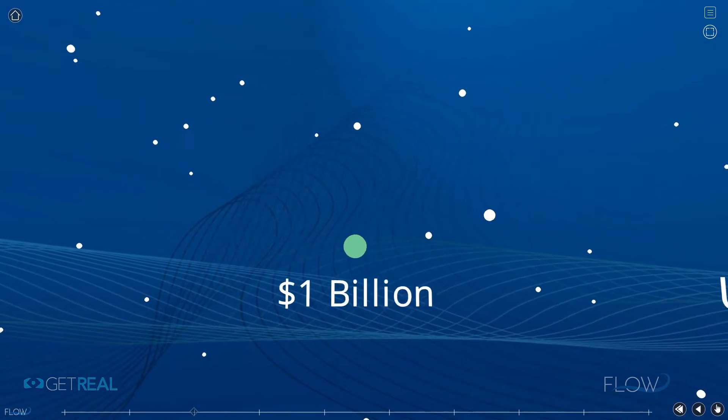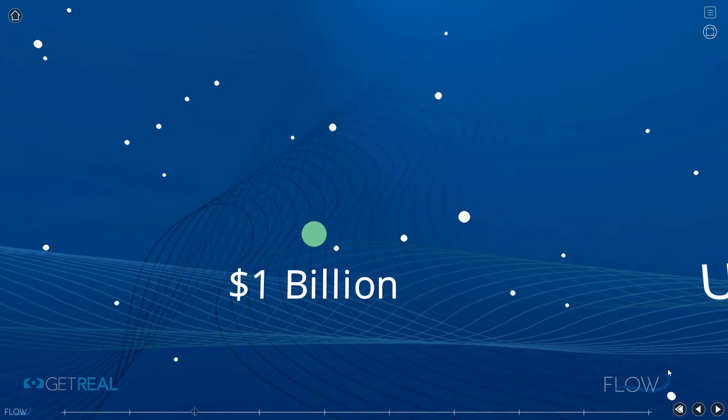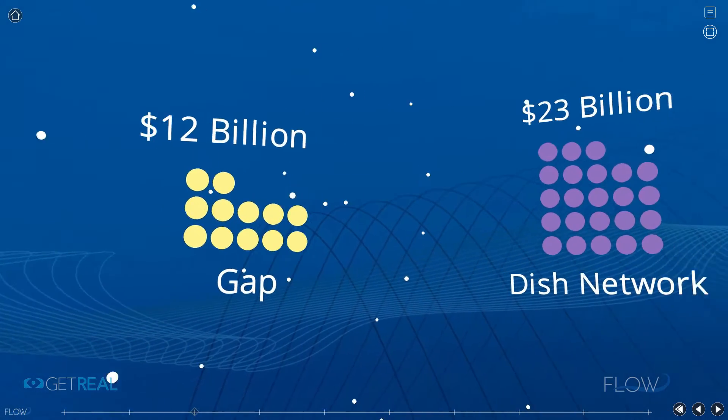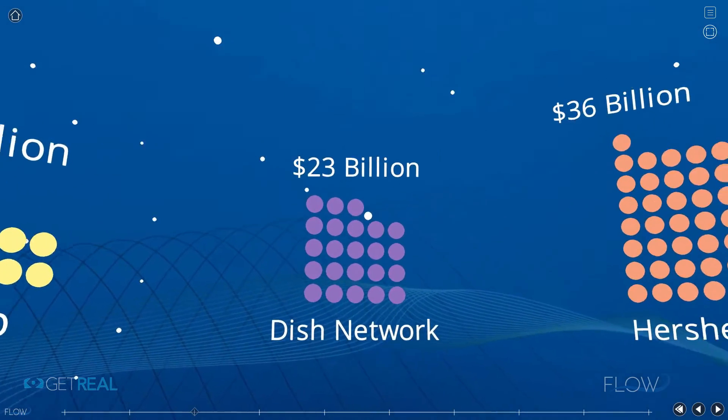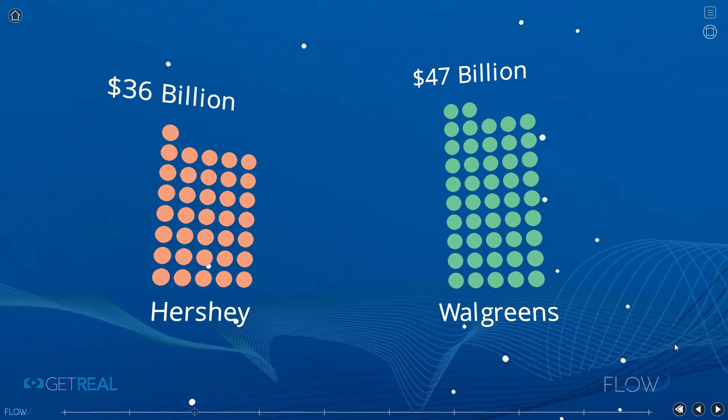For this comparison, each point will represent $1 billion, and here are a few well-known companies in the S&P with their respective market cap. At $9 billion, we have Under Armour. At $12 billion, we have Gap. At $23 billion, we have Dish. At $36 billion, we have Hershey. At $47 billion, we have Walgreens.